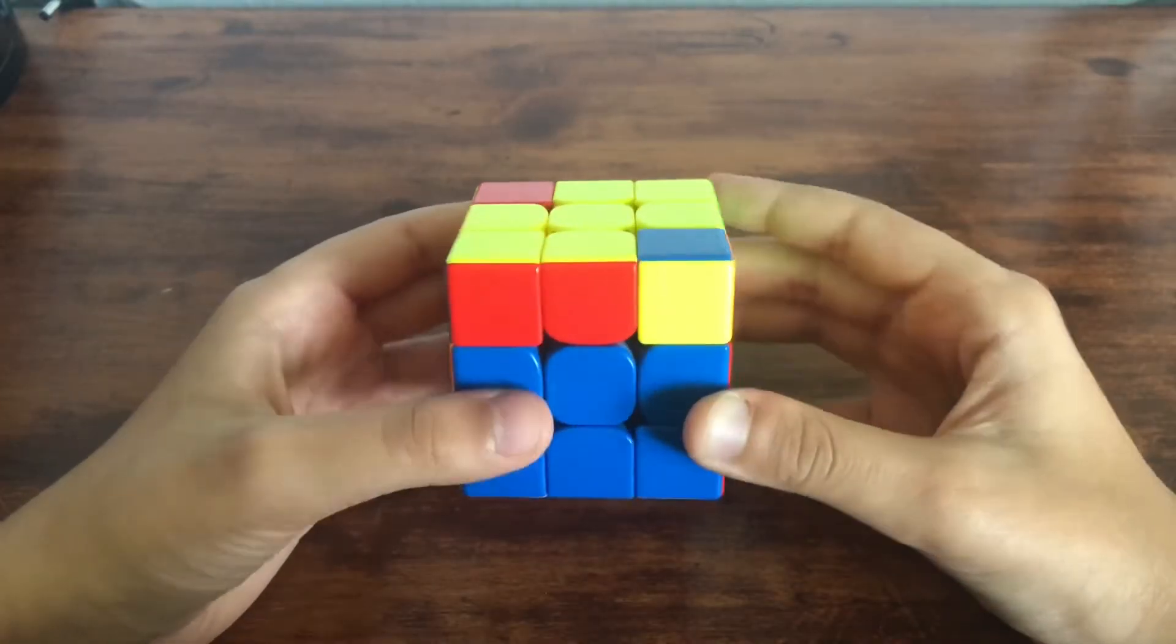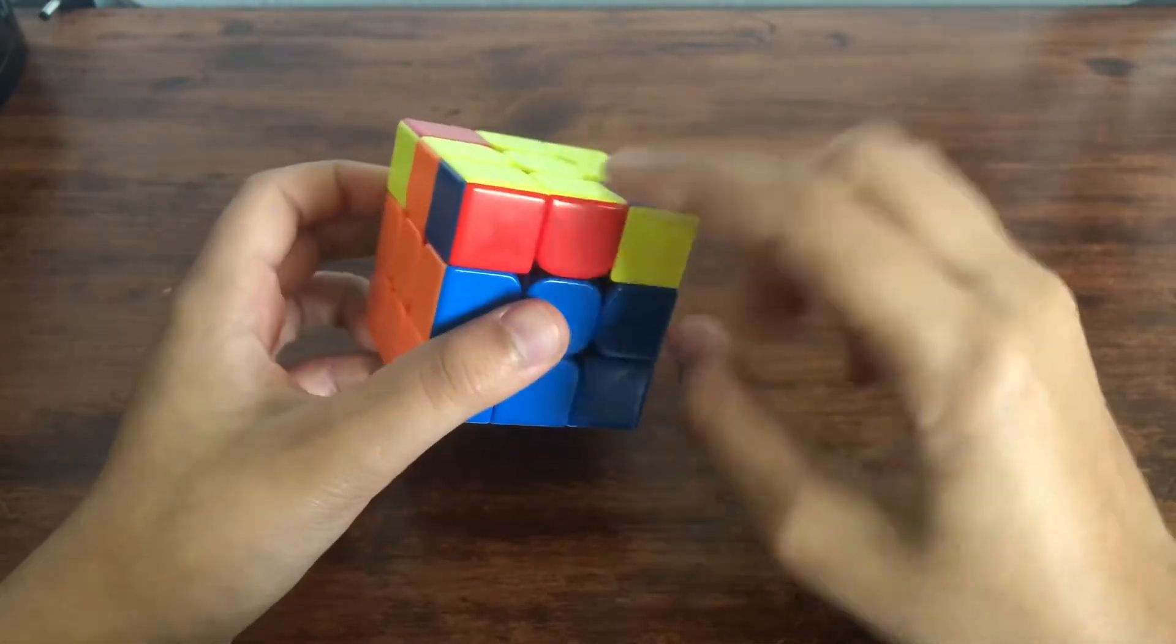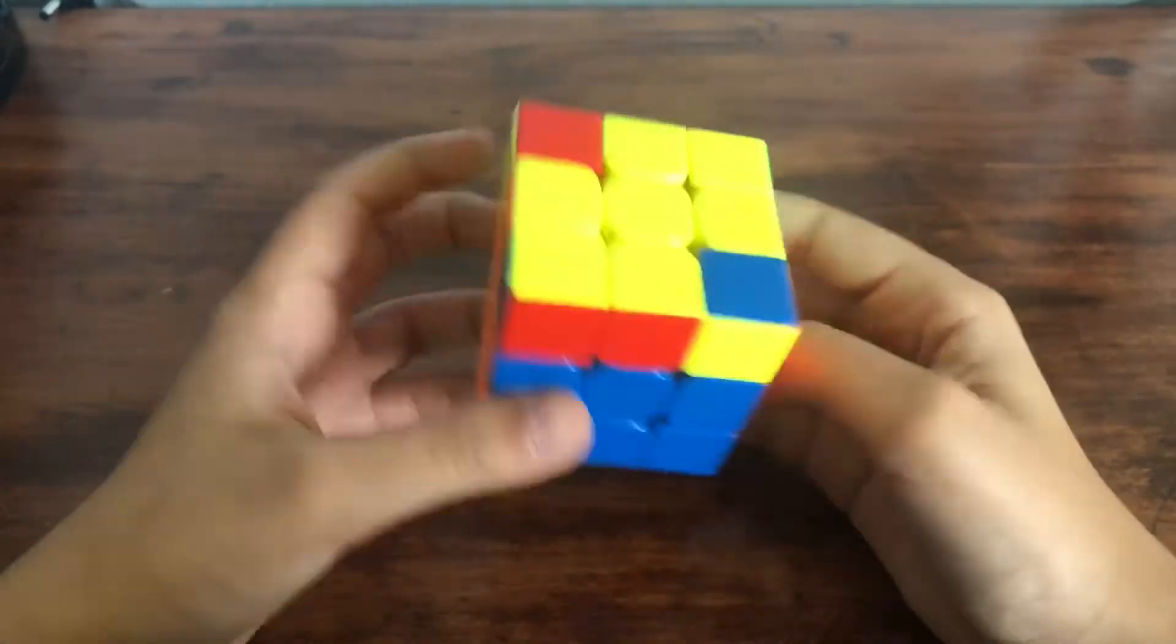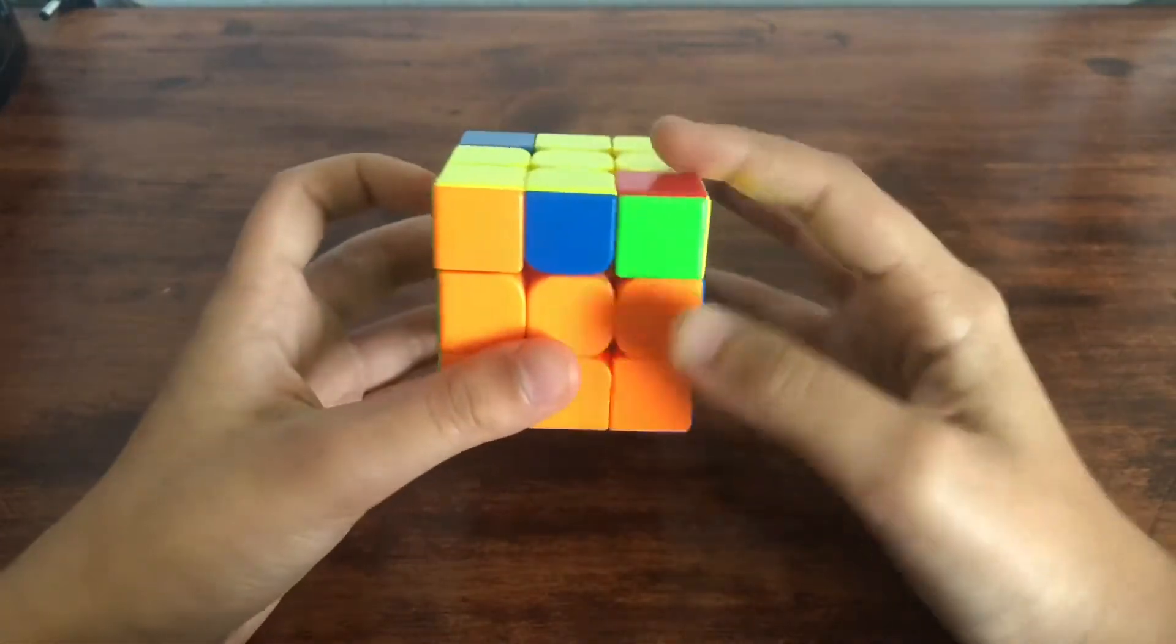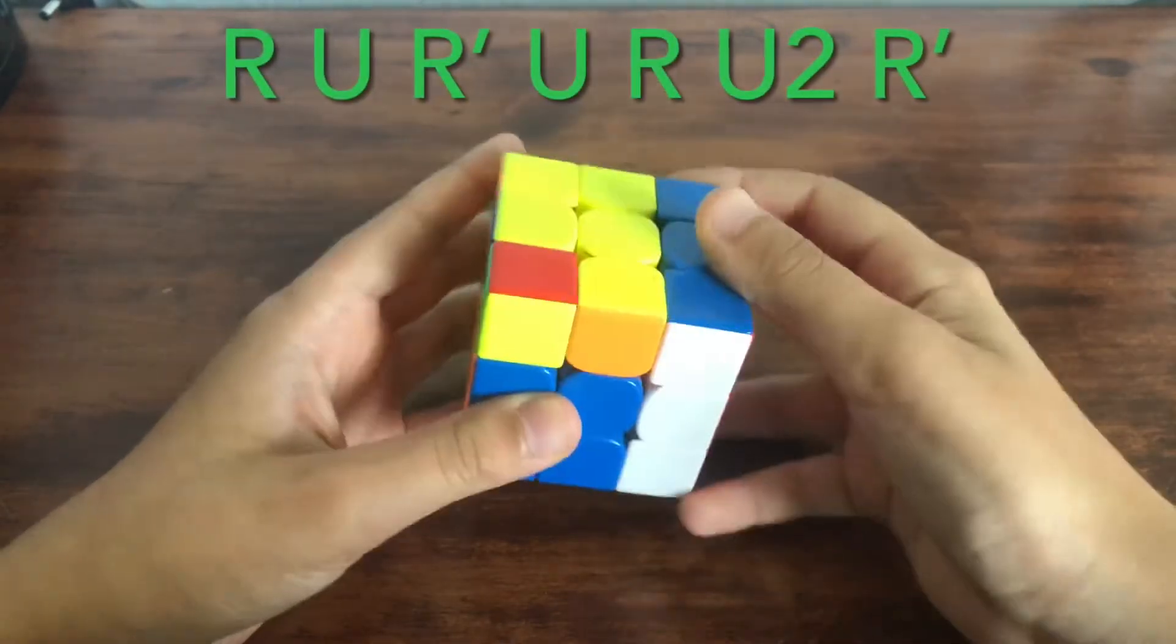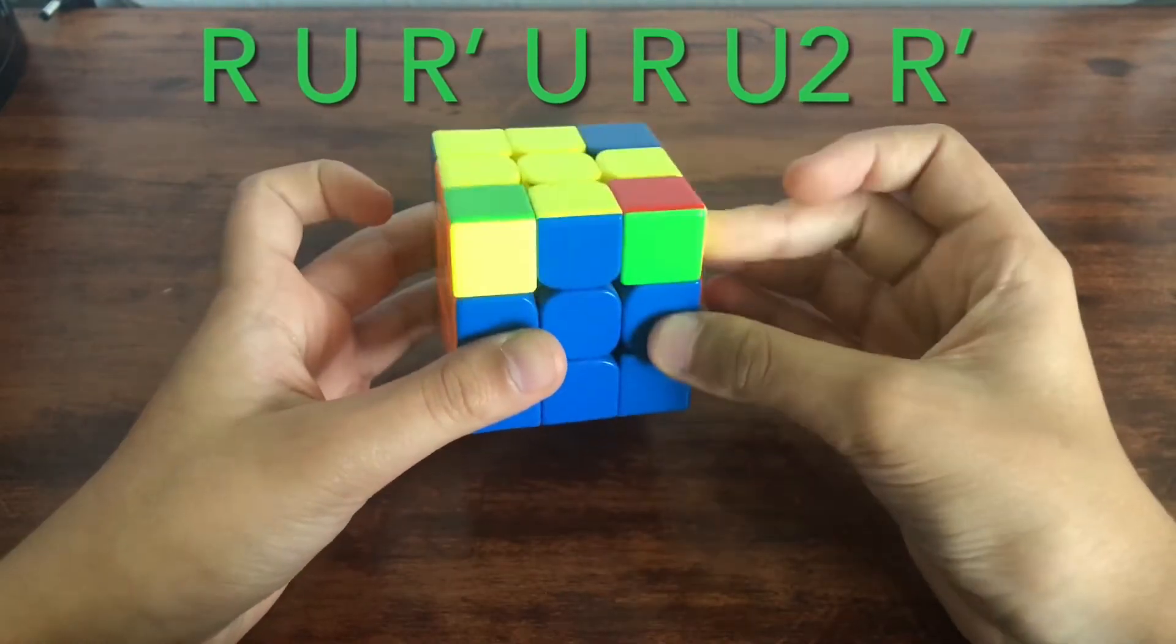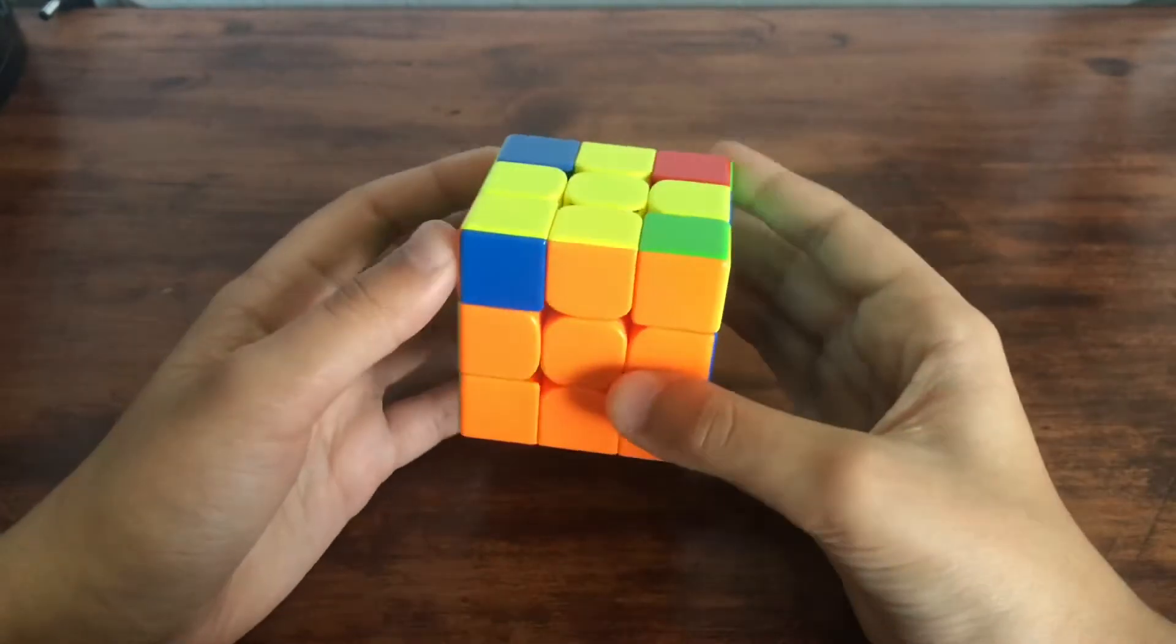The next algorithm is called a Sune, and you already know it from beginners method. In beginners method when you want to make all of these pieces the same, you hold them in the back and then you do this algorithm: R U R' U R U2 R'. Now you see you have all of those in place, which you already know from beginners method once again.